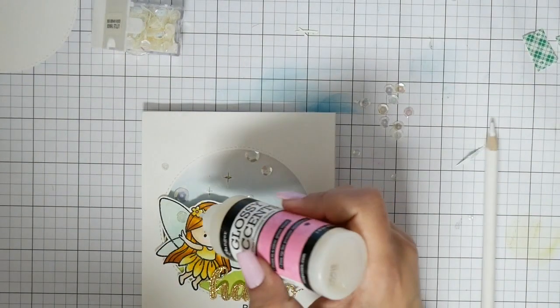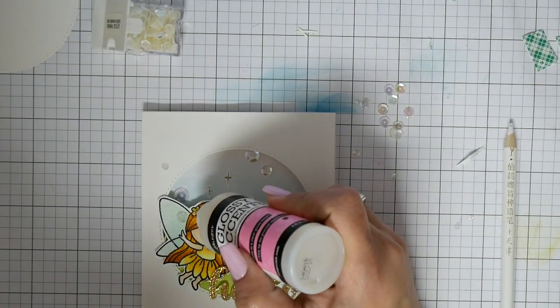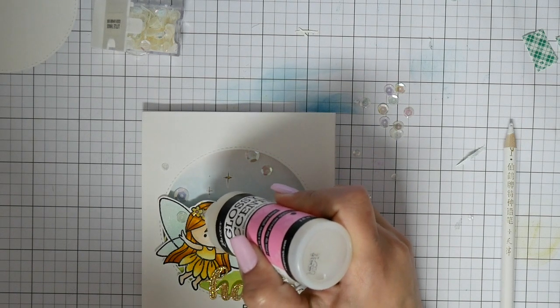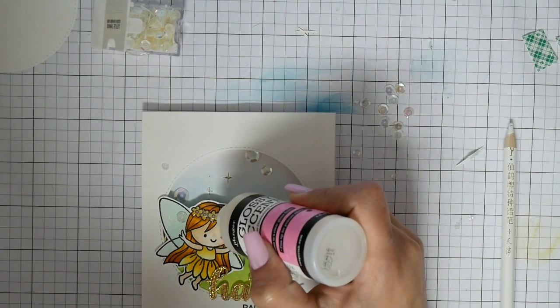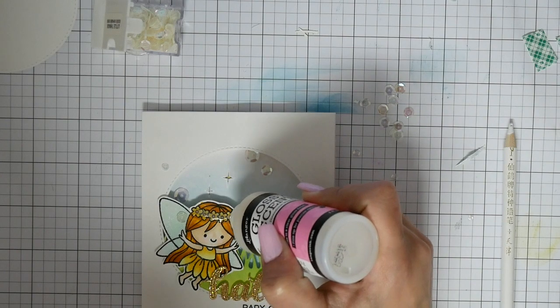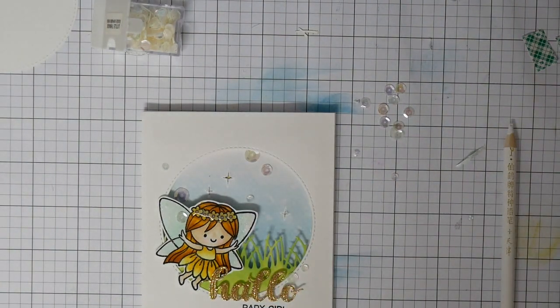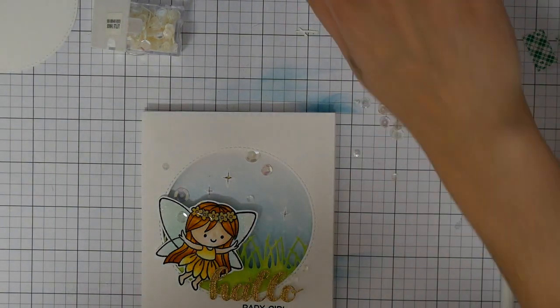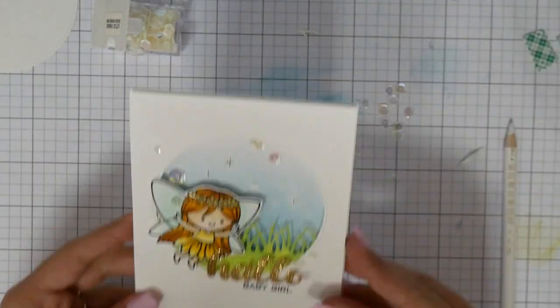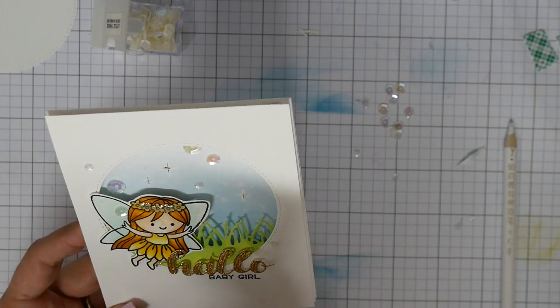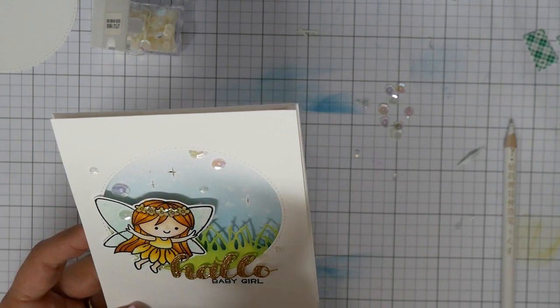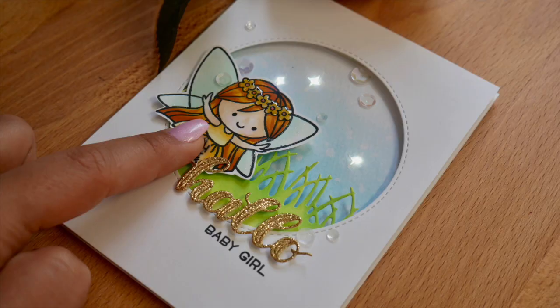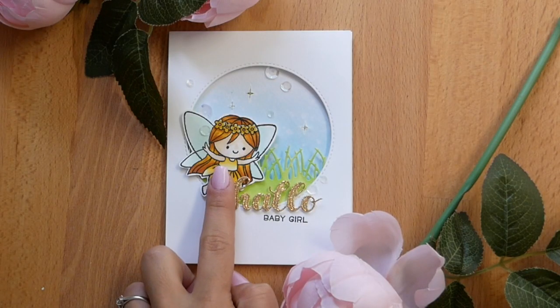I'm using here some iridescent sequin mix from Lucy's Little Things because for fairies, as I already told, I like to have a lot of glitter. Now my card is almost done. I totally forgot to film that I'm using here a little sentiment to glue on top of the belly where the battery is, so the recipients know where to press that the card will shine.